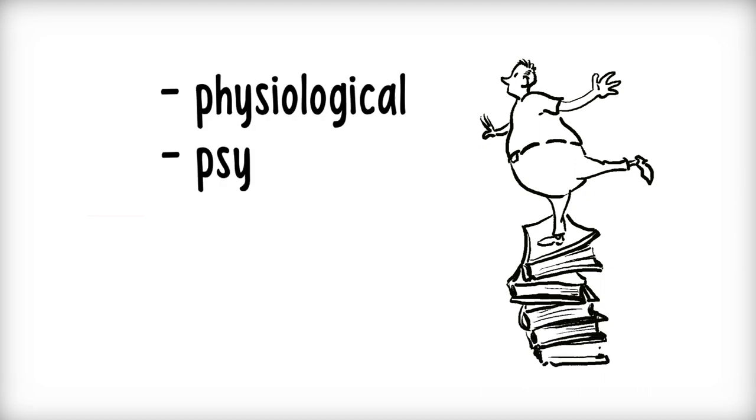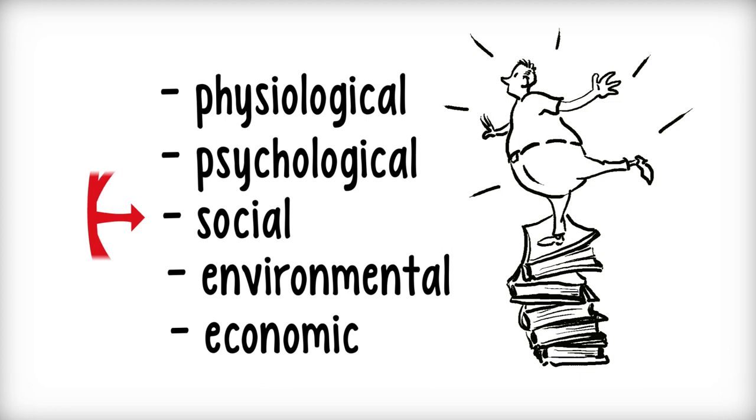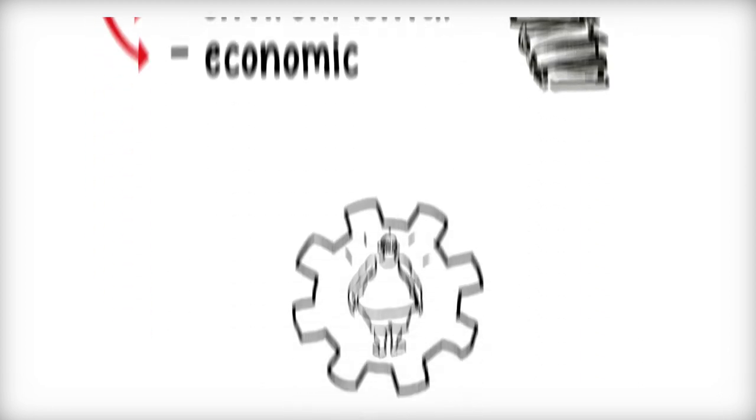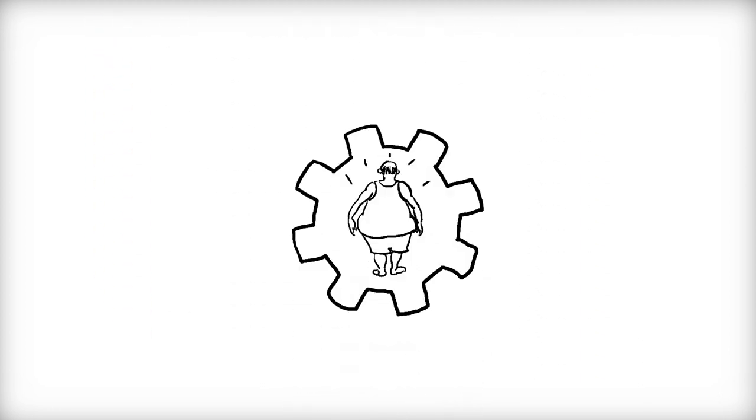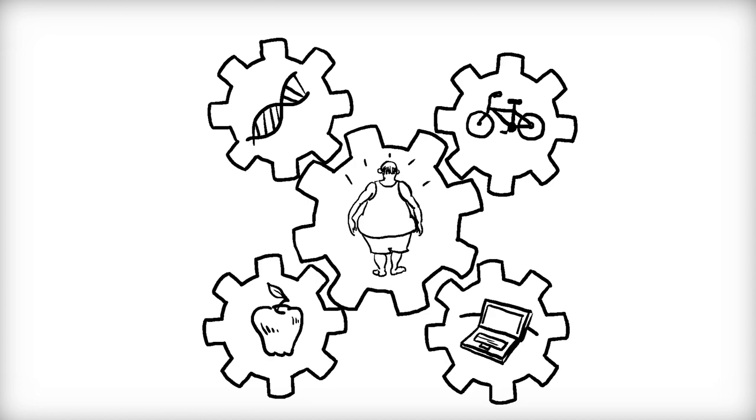Research tells us that obesity is the result of a combination of many physiological, psychological, social, environmental, and economic factors that all interact with one another. For example, at the individual level, there are issues such as human physiology, exercise habits, food choices, and one's occupation.